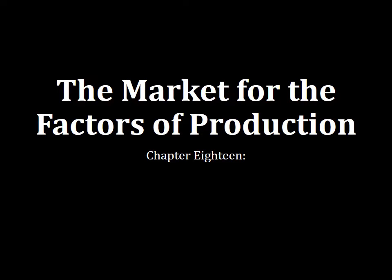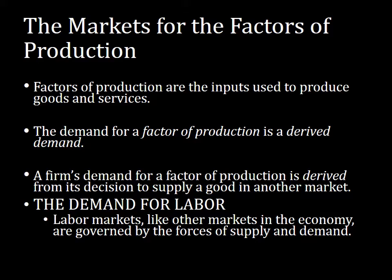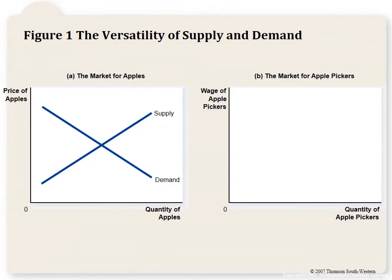Today's PowerPoint screencast is about the market for factors of production. The factors of production are land, labor, and capital — any factor used to produce goods and services. An important note is that the demand for factors of production is derived demand: the demand for any factor ultimately comes from the demand for the product it produces. Firms will only employ a factor if they can sell what it produces for a profit.